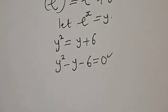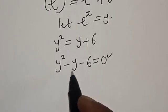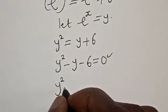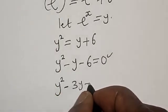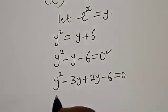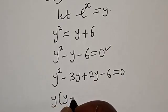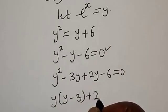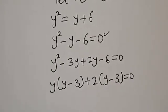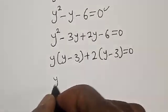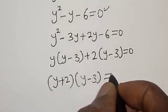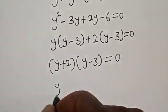This quadratic can be solved using factorization, the quadratic formula, or completing the square. We will use the factorization method. So we have y squared minus 3y plus 2y minus 6 equals 0, giving us y times (y minus 3) plus 2 times (y minus 3) equals 0, which factors to (y plus 2)(y minus 3) equals 0.